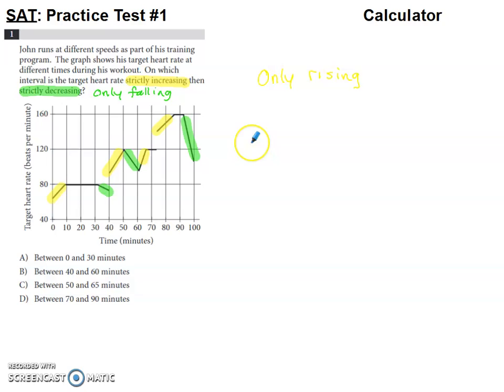On which interval is the target heart rate strictly increasing, then decreasing? So strictly increasing means that it's only rising. It's not rising and then leveling off and then falling. It's only rising. Strictly decreasing means only falling.